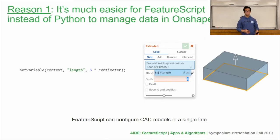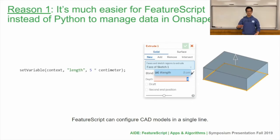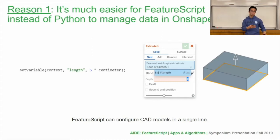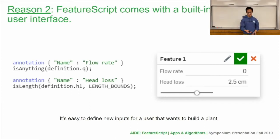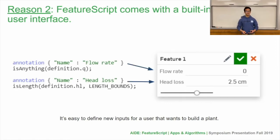We can also easily pull measurements from Part Studios, which is super helpful when we want to partially design a component, gather some measurements of what it looks like, and then go back and complete the final optimized design. FeatureScript also makes it really easy to share knowledge between components, which is good for designing the entire plant and ensuring all the components work together. Another reason is that it becomes really easy to add the correct inputs within our feature type, because FeatureScript comes with a built-in user interface. If we were to do this in Python, we would have to code up this entire thing. But with only these few lines of code, we're able to create a very competent GUI, which will allow new users to easily use AID.